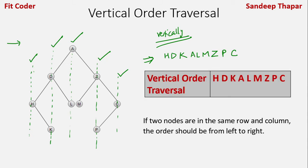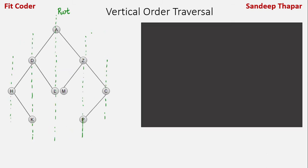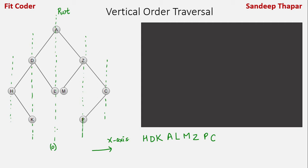Given any binary tree, we have to find an algorithm that prints the vertical order traversal. Let's see how we can do that. We have seen the vertical order traversal of this tree. Let's consider the root is at location 0 on the x-axis and draw the distances of each of the nodes.